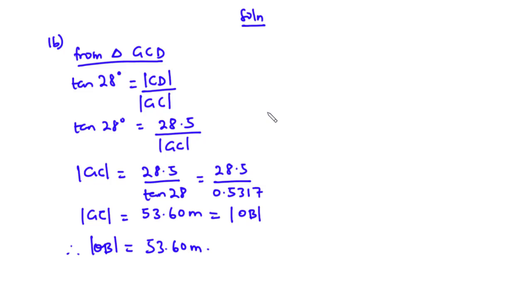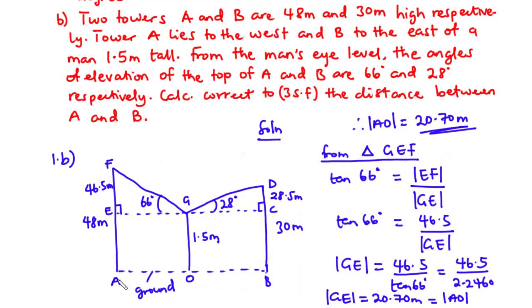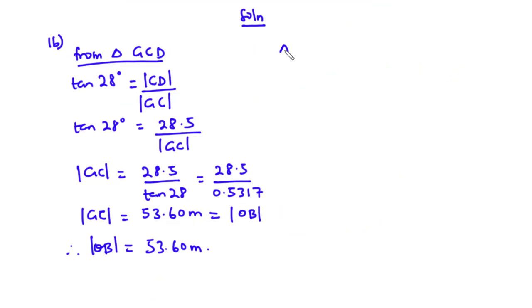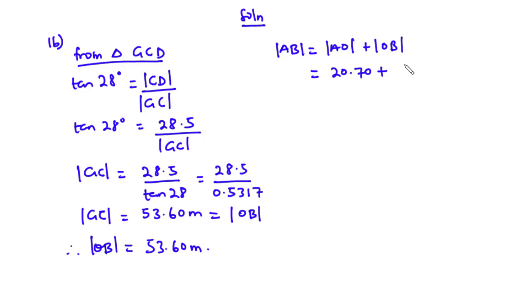To find the distance between A and B, we add: AB equals AO plus OB. That is 20.70 plus 53.60, giving 74.30 meters. We are asked to leave the answer correct to three significant figures, so the distance between A and B is 74.3 meters.